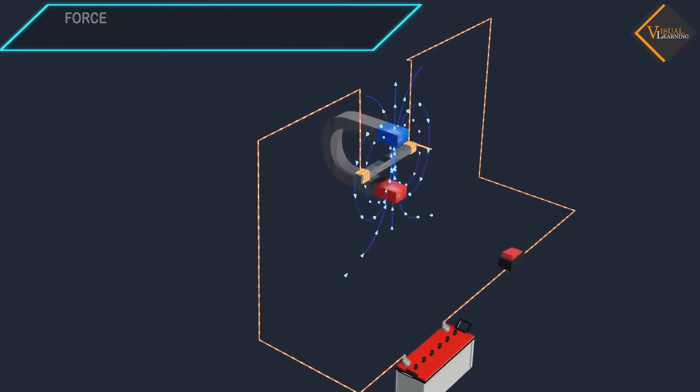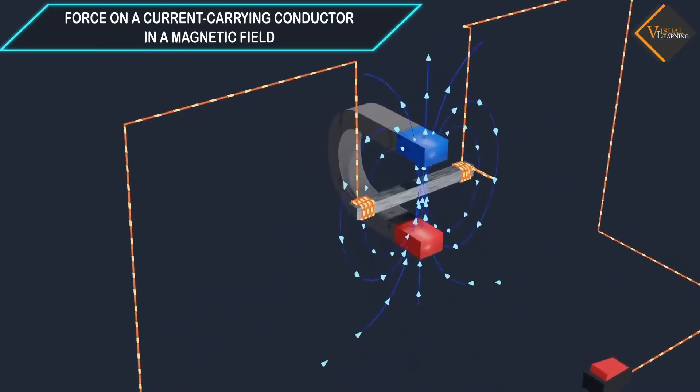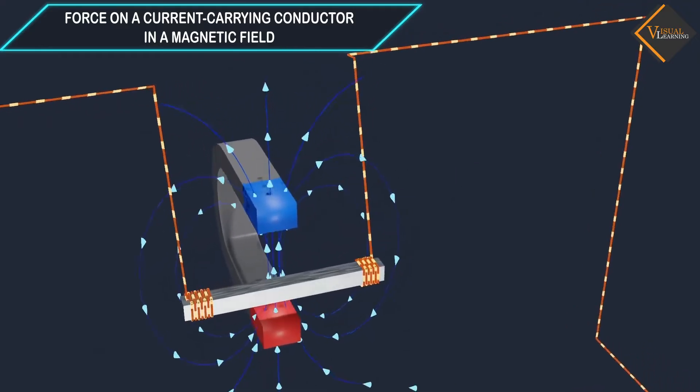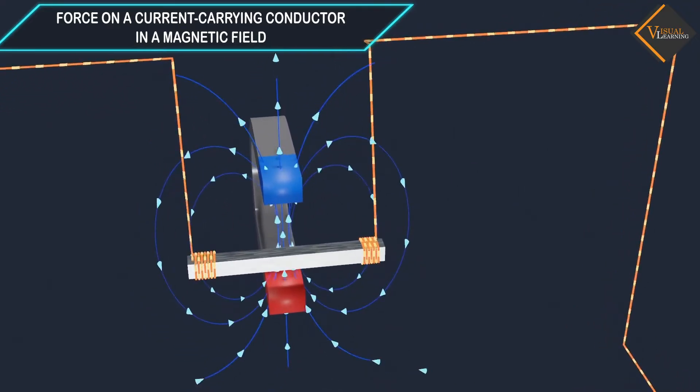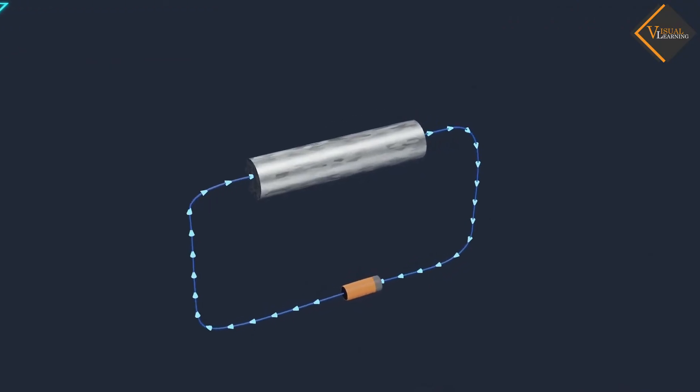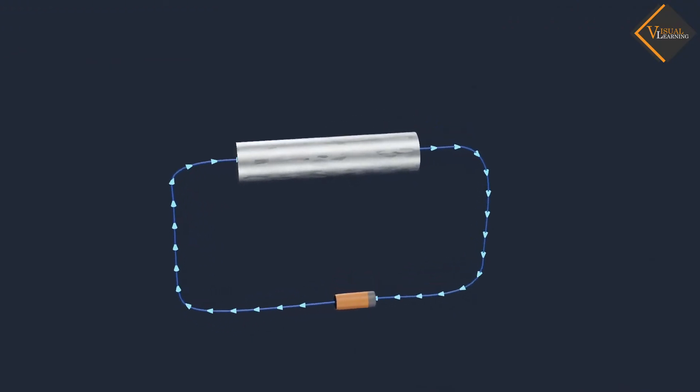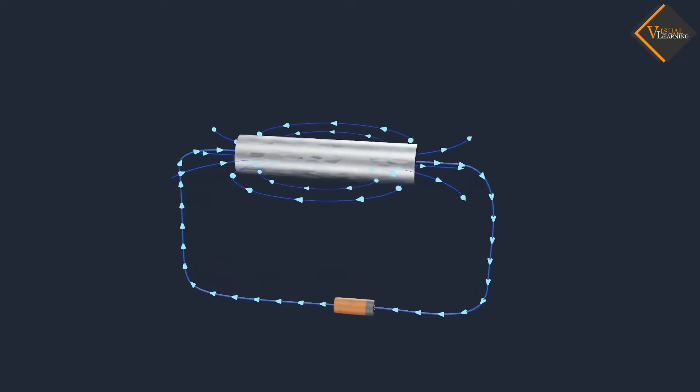In this video, we will understand force on a current-carrying conductor in a magnetic field. We know that when an electric current flows through a conductor, it produces a magnetic field.